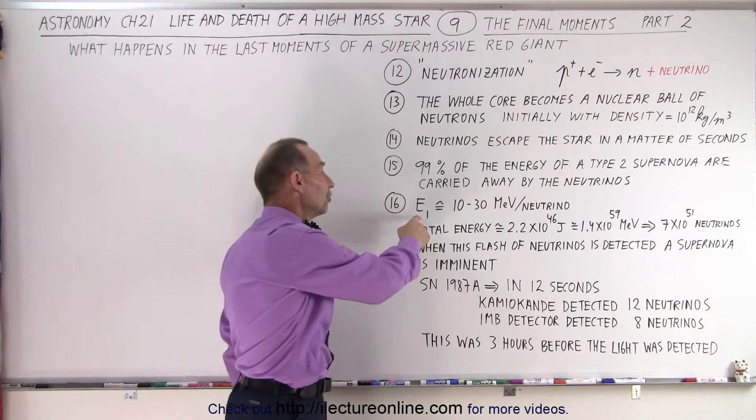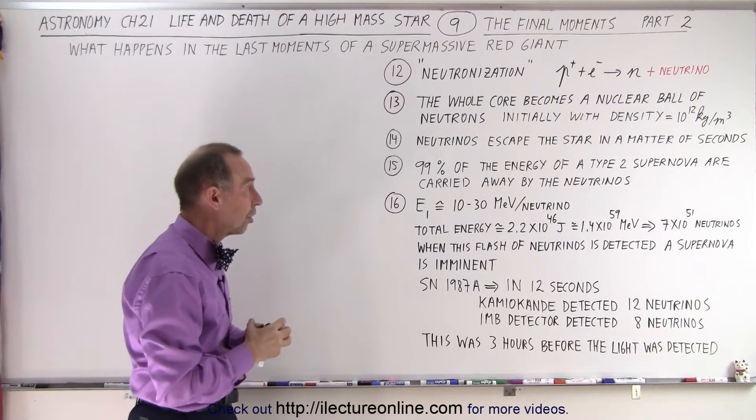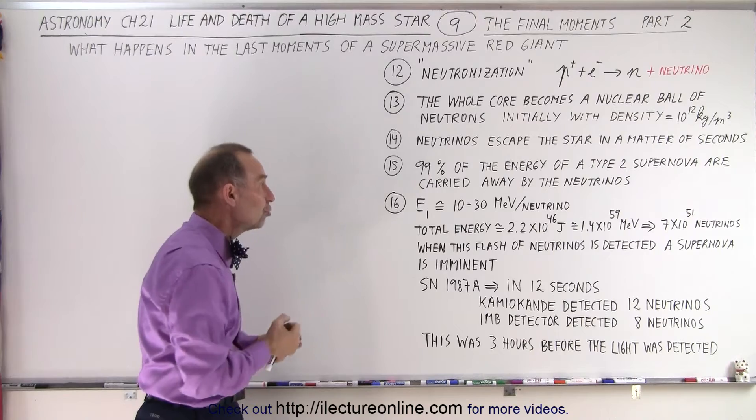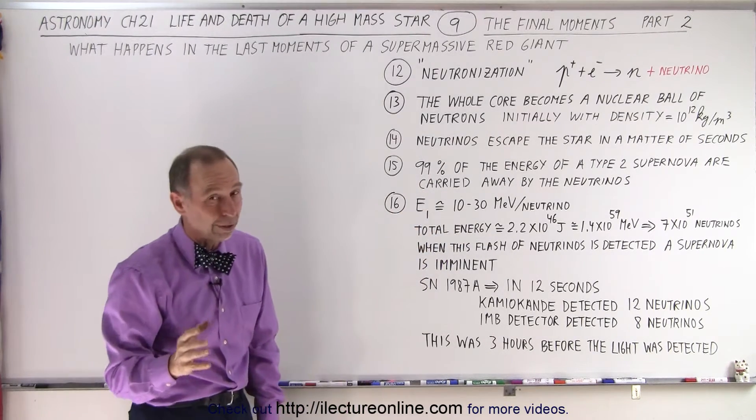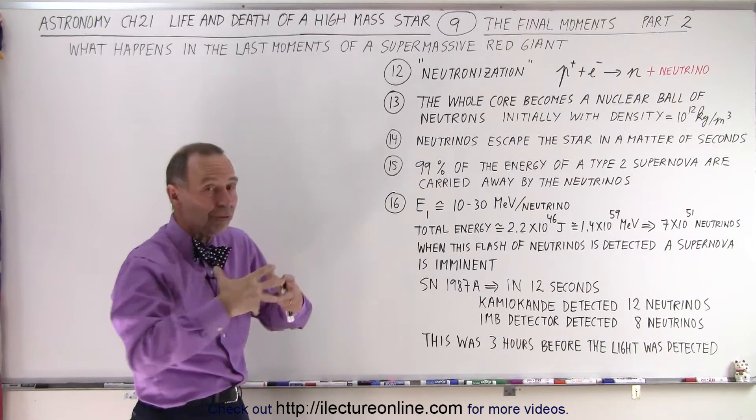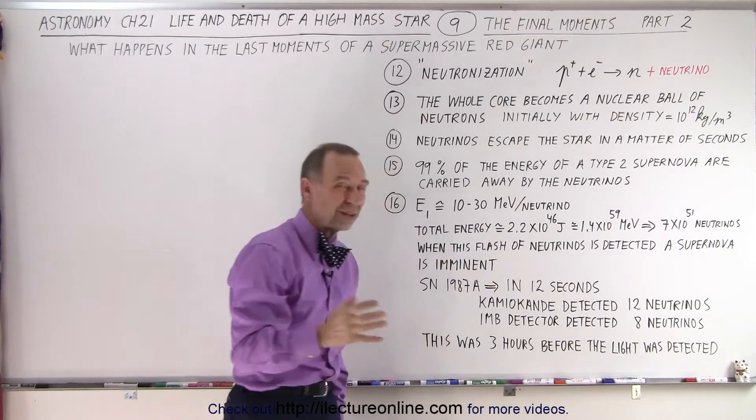Now, the typical energy of a neutrino generated during the collapse of a star, of the core of a star where protons and electrons are combined into neutrons is about 10 to 30 million electron volts per neutrino, which is a lot of energy for a neutrino. The total energy for a typical supernova is about 2.2 times 10 to the 46 joules.